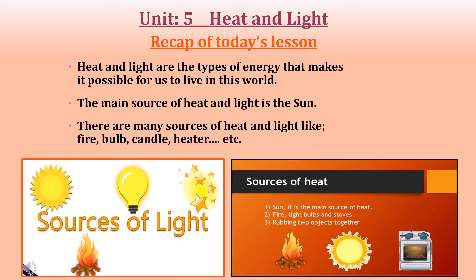At the end of today's lesson, let's recap. We have read that heat and light are types of energy that help us live and perform different tasks. The main source of heat and light is the sun. Other sources of heat and light include fire, bulb, candle, heater, and many more. That's it for today — Allah hafiz and take care.